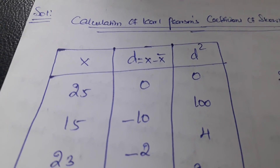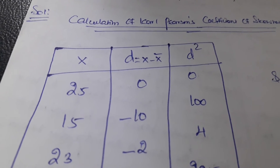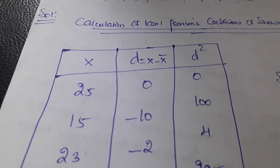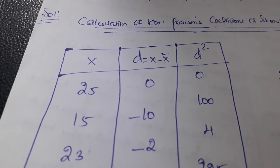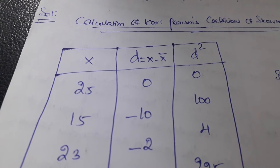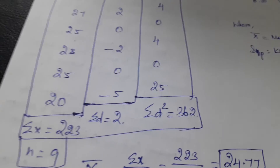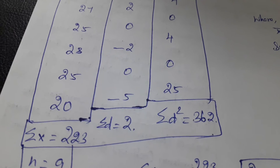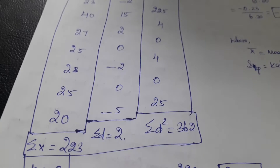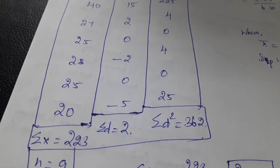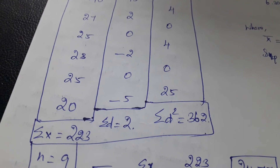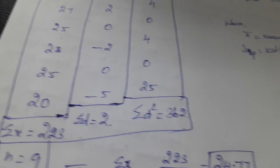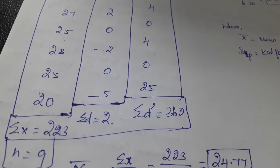t is equal to x minus x̄, where x̄ means the mean. We simply subtract the mean value from each x value. After doing so, we get the t values, and finally the summation of t equals 2.